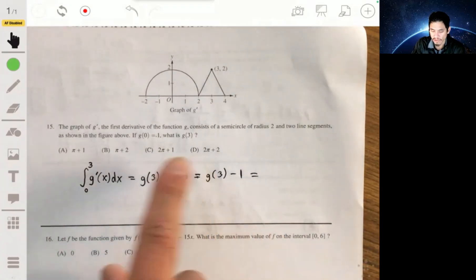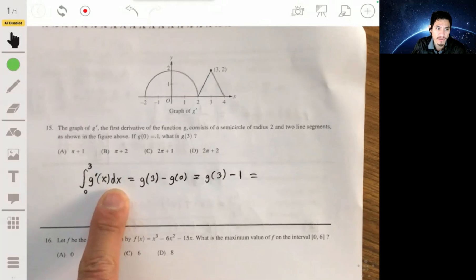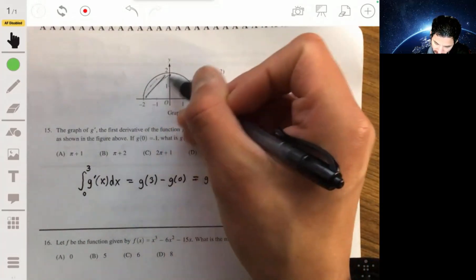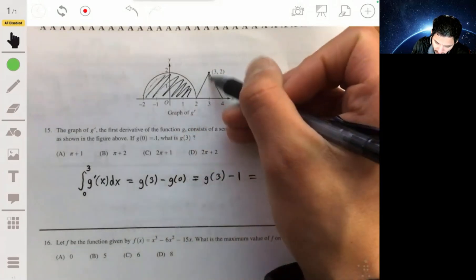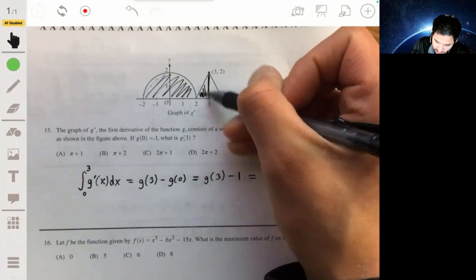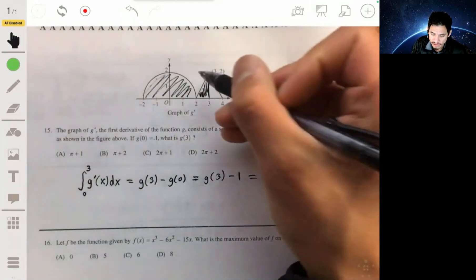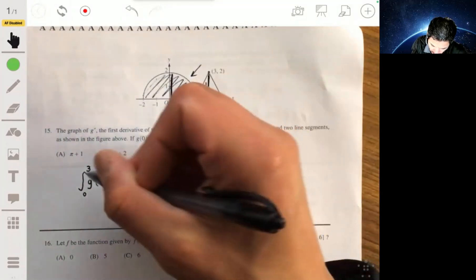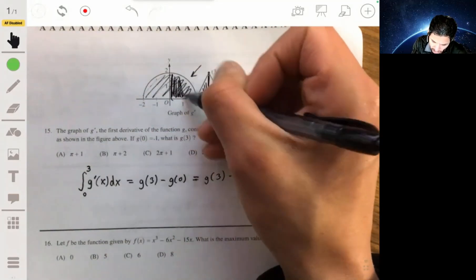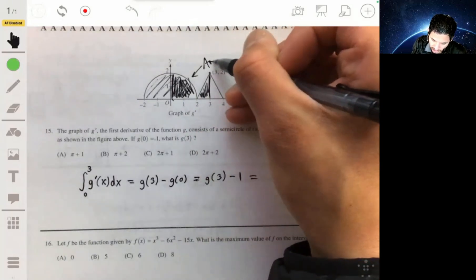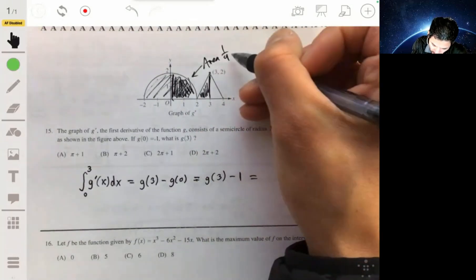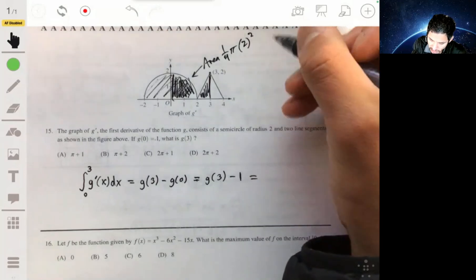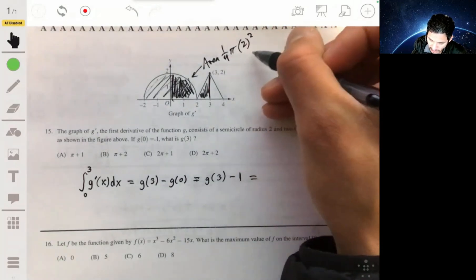If we can find the total value of this definite integral, which you can, because you just have to find the area, essentially, of the semicircle and of this triangle, half this triangle here. The area of the semicircle, or actually only this part, because we're going from 0 to 3, so it's only this quarter circle, so that area is 1 fourth, remember pi r squared, the radius is 2, so 1 fourth times 2 squared, so that will be just pi.